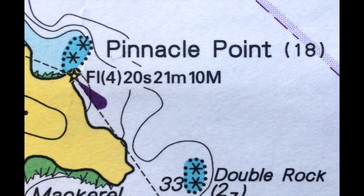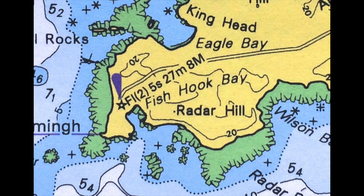The height above sea level is also given — for example, 21M means twenty-one meters above sea level. The range indicates how far the light can be seen — 8M means the light is visible from eight nautical miles.